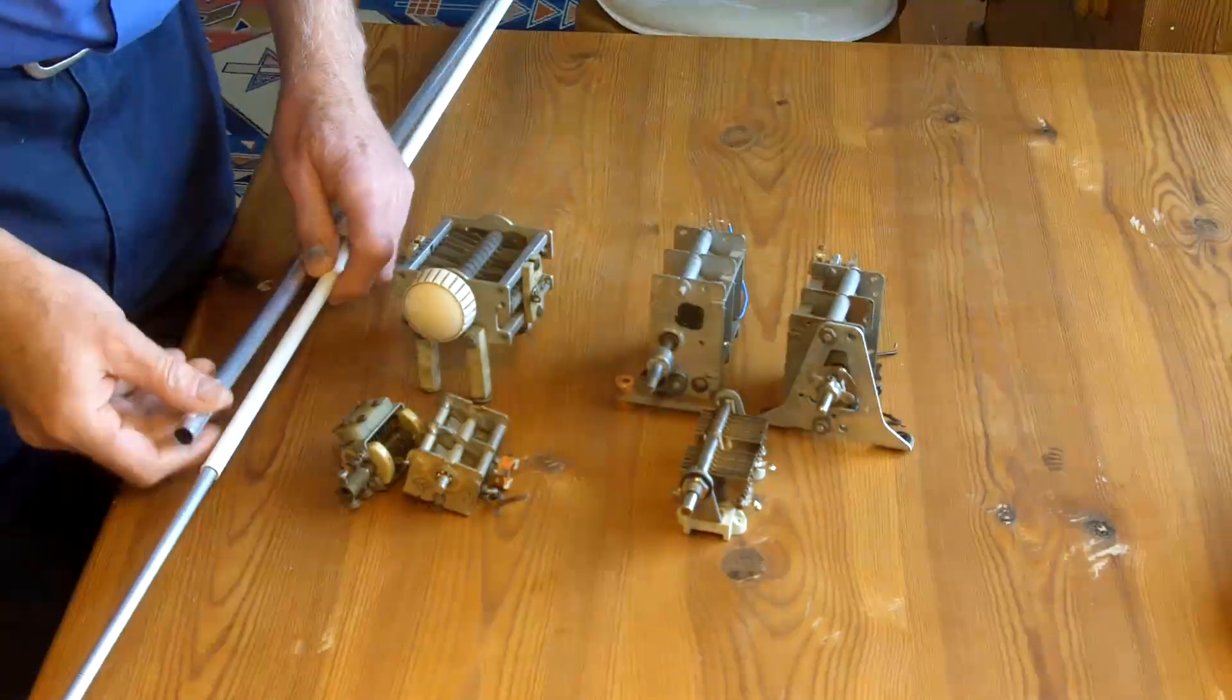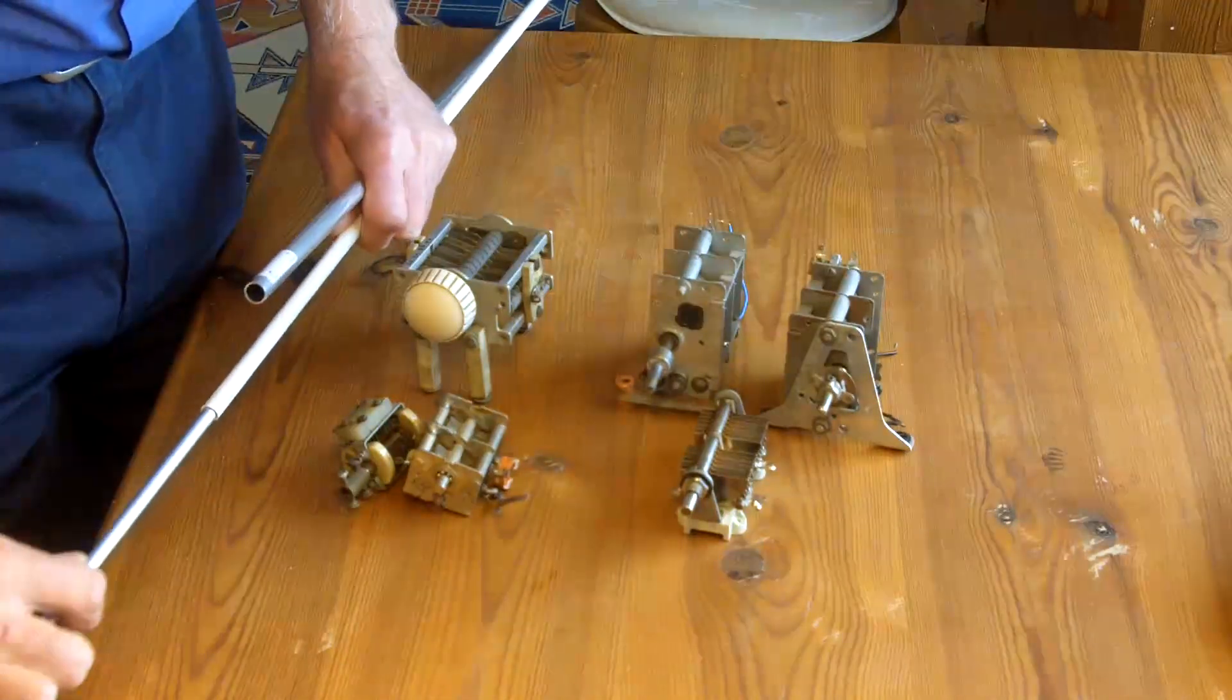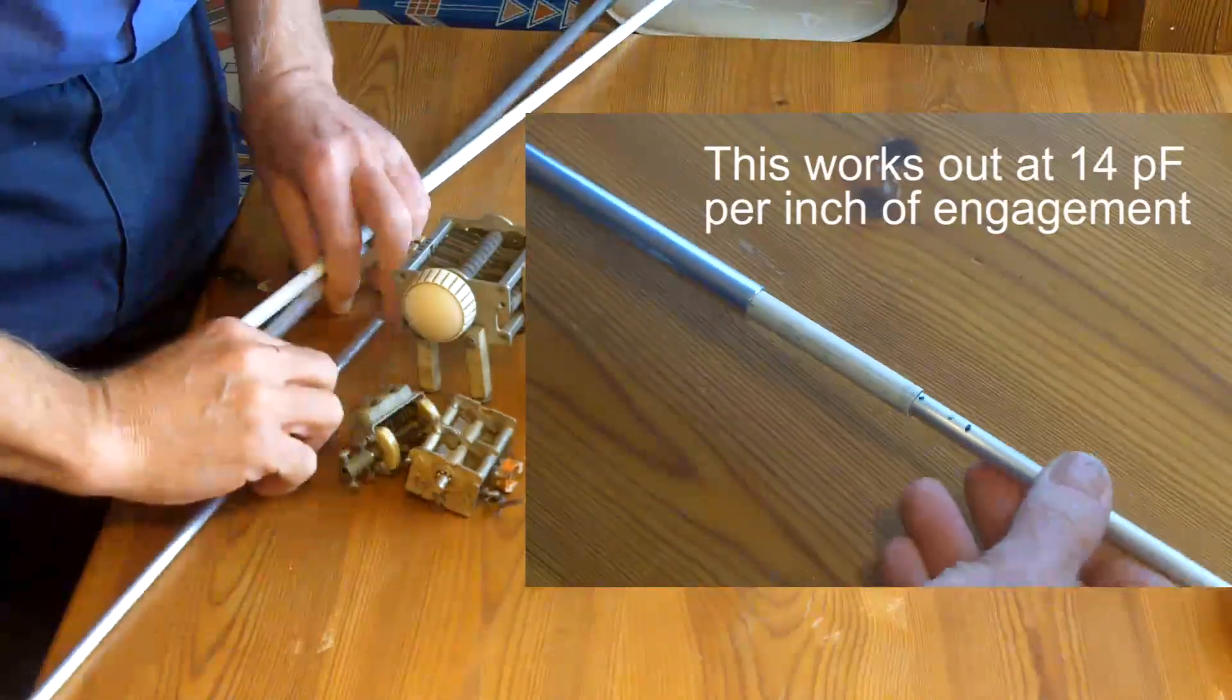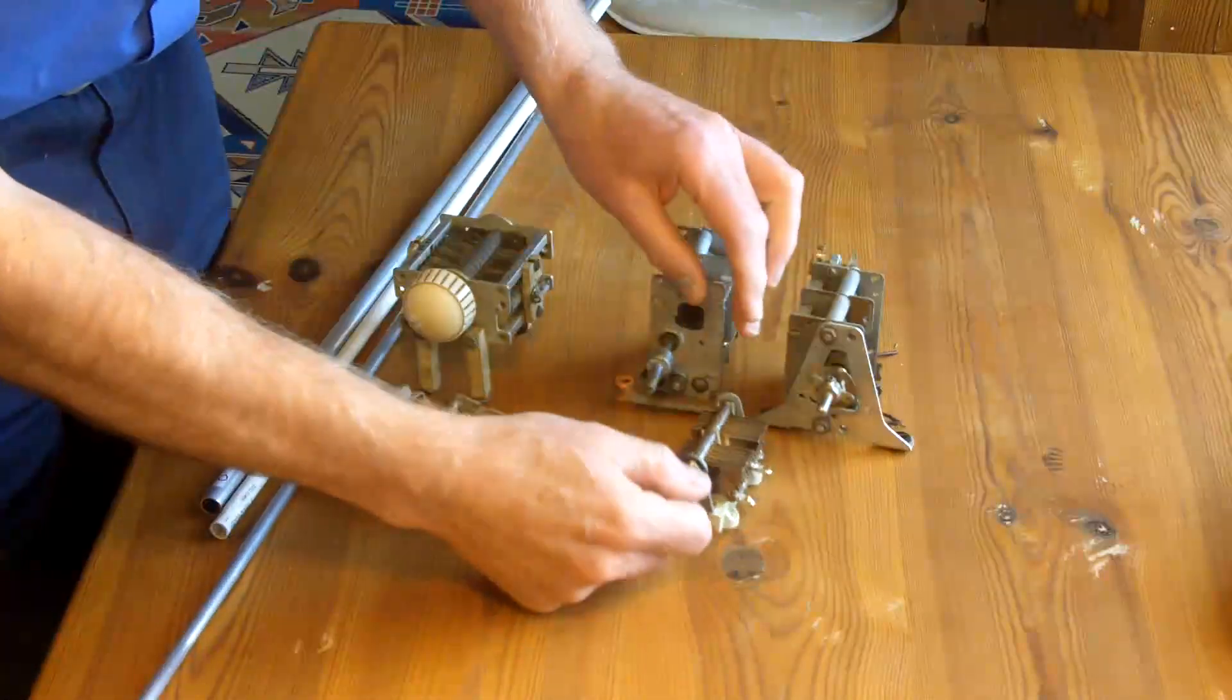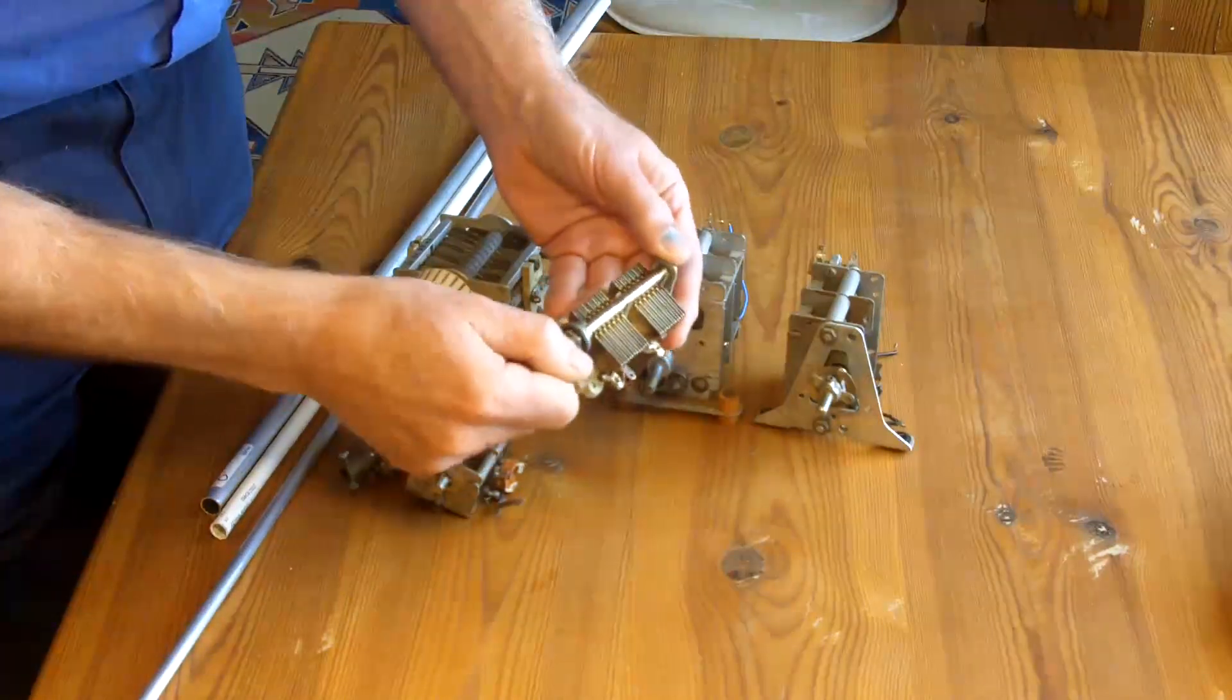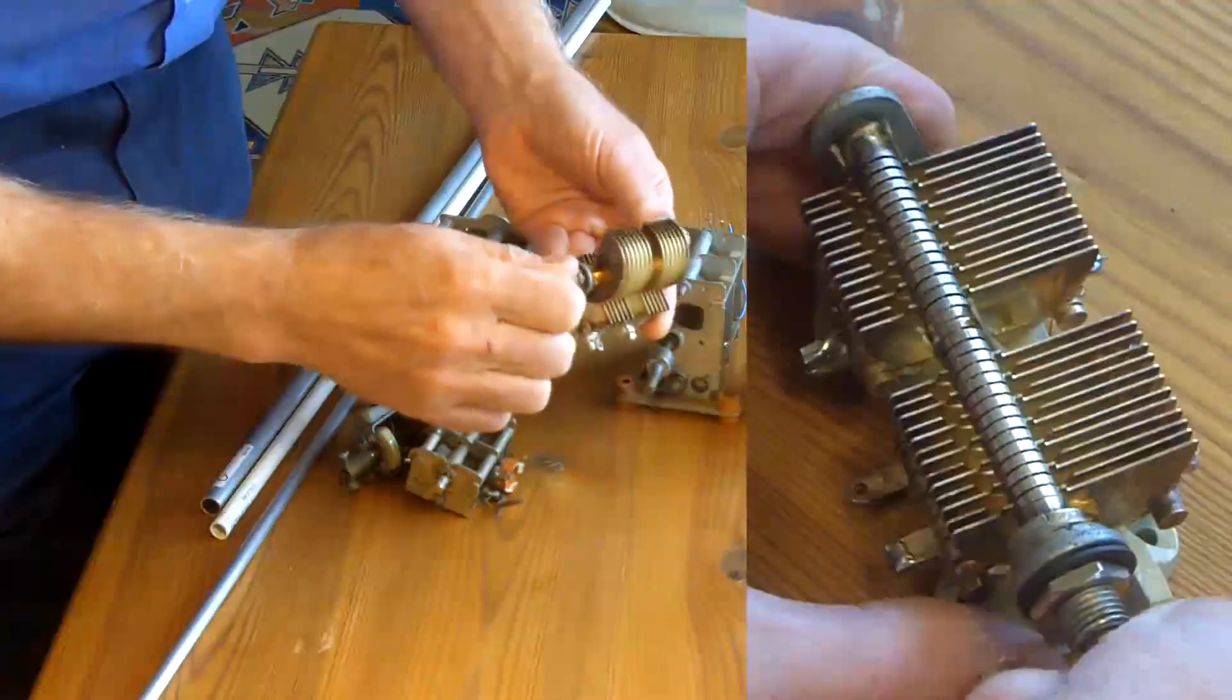This will be a capacitor that I make by putting this plastic tube inside here, and then this inner tube will move in and out. So that'll be again a linear capacitor. These are the capacitors that have a shaped vane. They typically only turn through 180 degrees because of mechanical constraints within the design.